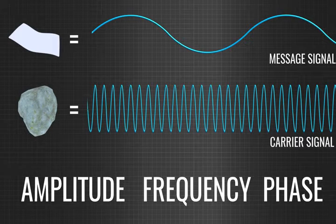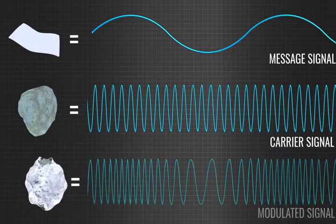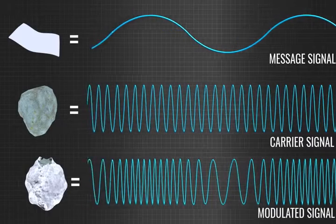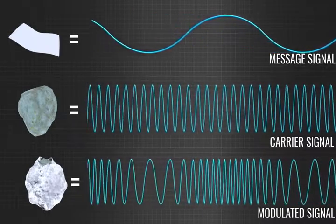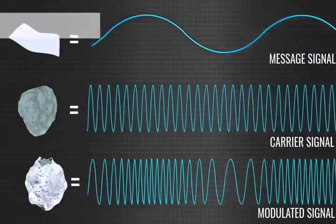In the modulation process, one of the properties of the carrier signal is varied in accordance with the message signal. For example, the frequency of the carrier signal is varied according to the amplitude of the message signal. This technique is known as frequency modulation.